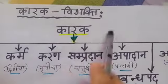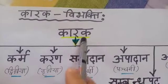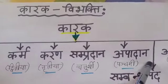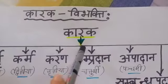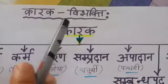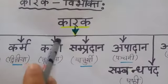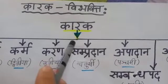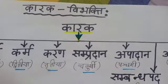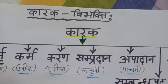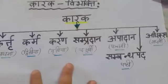Now I will make one structure for you so that it will be easy for you. Please write this structure in your CW copy.